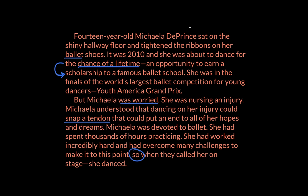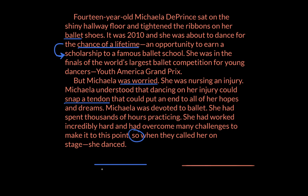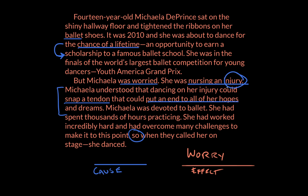Question number one: why was Michaela worried? We can fill out a little form — the cause goes here, the effect goes here. In the effect box, I'm going to say "worry." That's the effect. But why is Michaela worried? Well, she was nursing an injury. And not just that she was injured, but if she pushed that injury too far and snapped a tendon, it could put an end to all of her hopes and dreams — that is extremely serious. So that injury represents a lot more than just temporary pain. It represents a possible end to her hopes and dreams. What that injury could be — its potential outcomes, its potential effects — are what are causing her to worry.